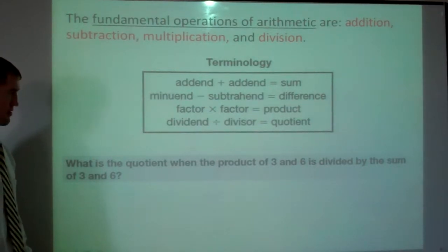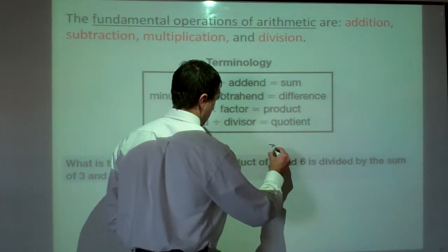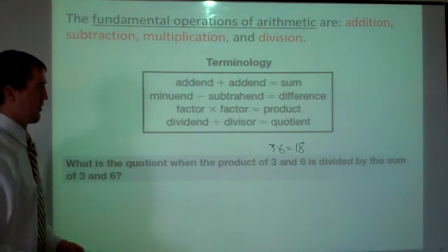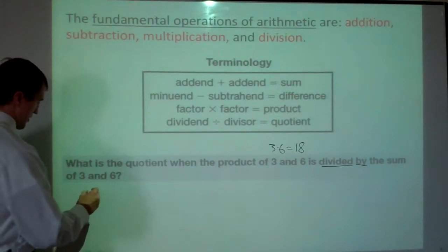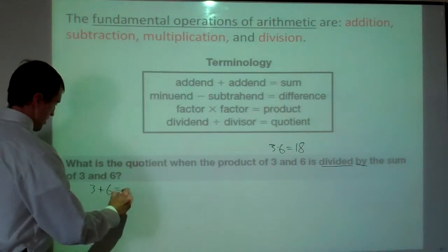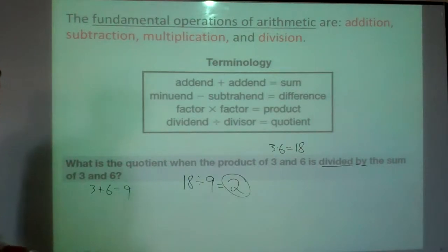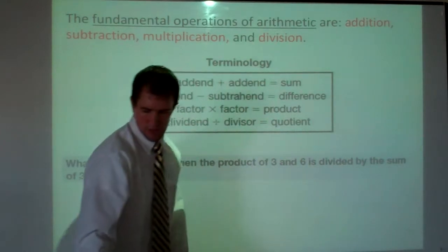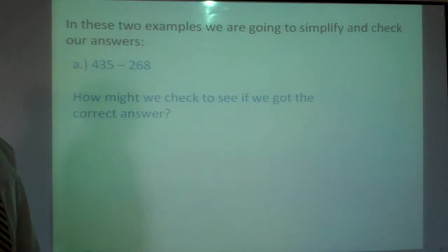First thing we have to do is figure out the product of three and six — that's three times six, which is 18. And we're going to divide that by the sum of three and six. The sum is three plus six, which is nine. So 18 divided by nine gives us two.